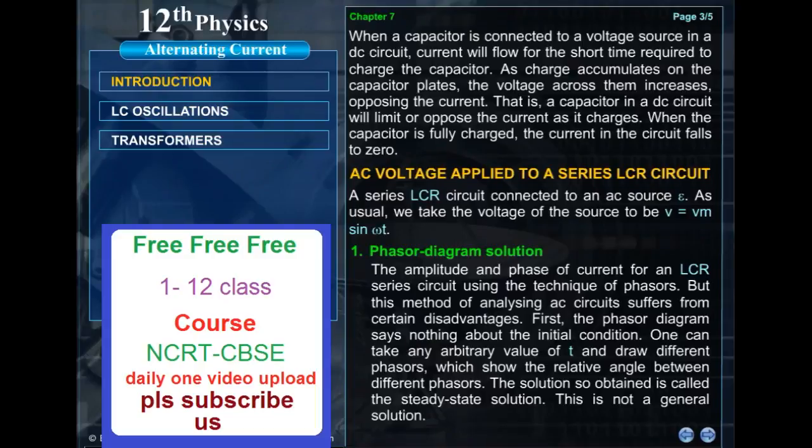AC voltage applied to a series LCR circuit. A series LCR circuit connected to an AC source epsilon. As usual, we take the voltage of the source to be V equals Vm sin omega T.